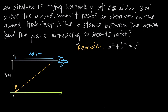Because this height of 3 miles is constant and because the plane is flying perfectly horizontally, we can indicate that we have a right triangle here with a 90 degree angle. The distance between the person and the airplane 30 seconds later is at this spot, and the distance between the observer and the airplane is the hypotenuse of this right triangle, where one leg is 3 miles and the other leg is 30 seconds.